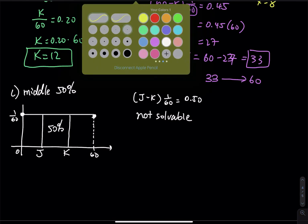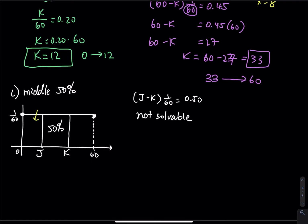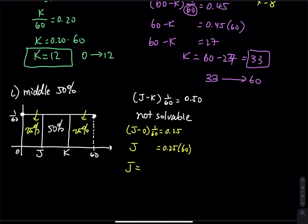We have to use the property of the middle 50 percent. You have 50 percent in the middle, so the remaining 50 percent is split equally: 25 percent on the left and 25 percent on the right. Use that 25 percent to find J and K. To find J: J minus 0 times 1/60 equals 0.25, so J equals 0.25 times 60. On the other side, 60 minus K times 1/60 equals 0.25, and multiplying both sides by 60 gives 60 minus K equals 15.